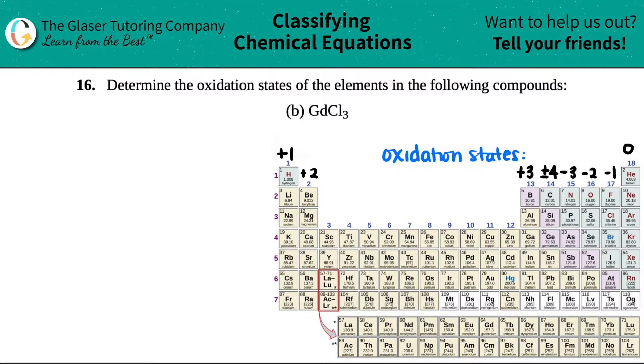Number 16: Determine the oxidation states of the elements in the following compounds. Letter b: GdCl₃. So I'm just going to rewrite this over here: GdCl₃. In 16a I went over the full rundown of oxidation states.